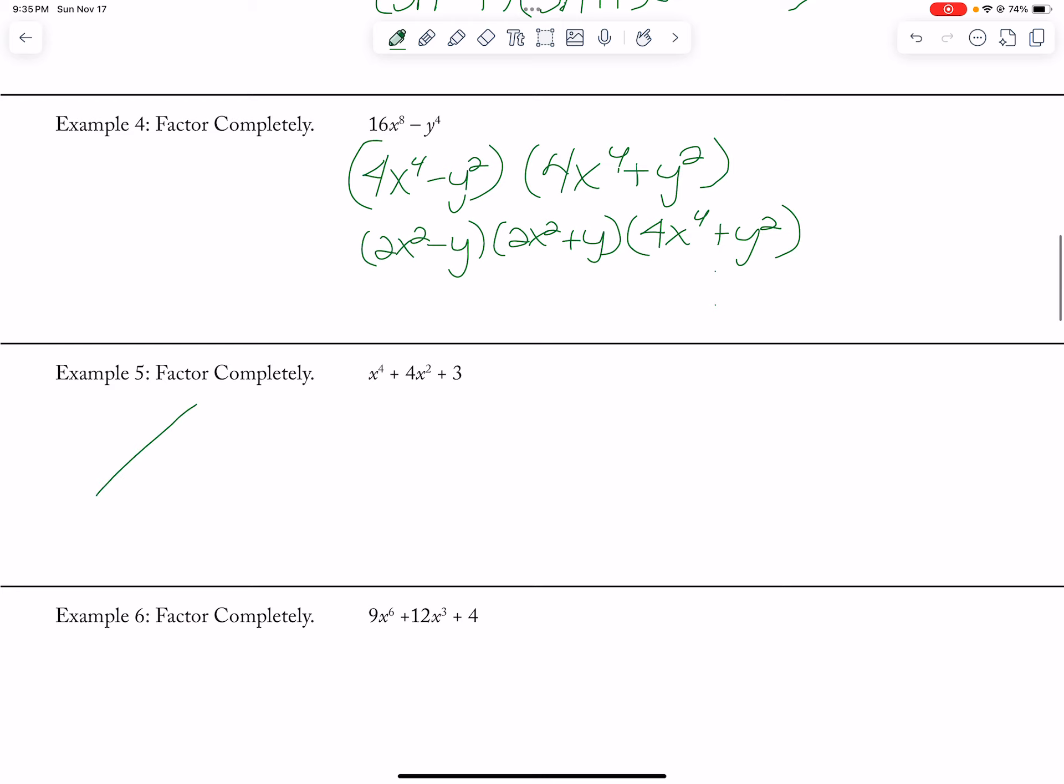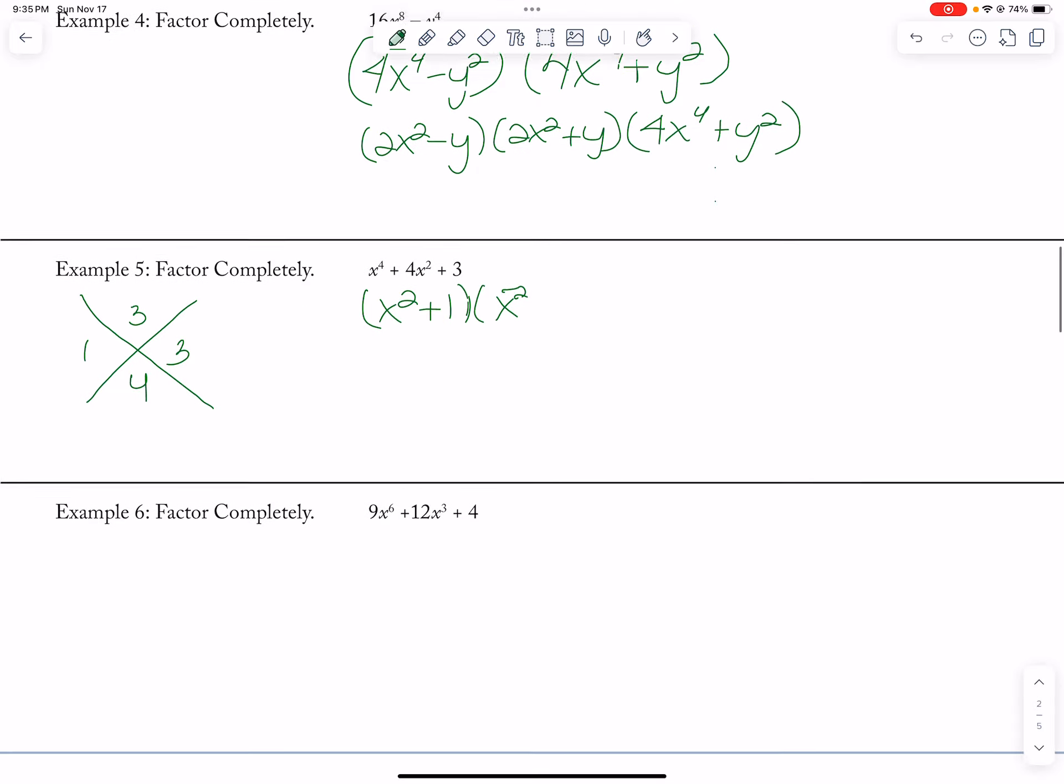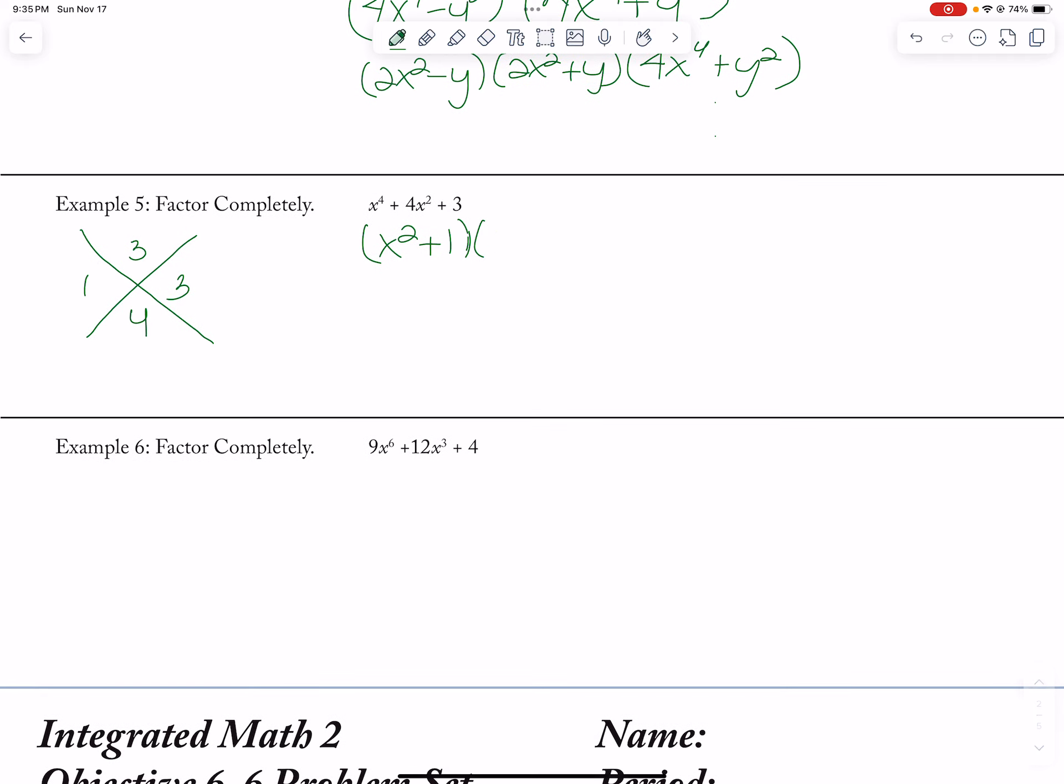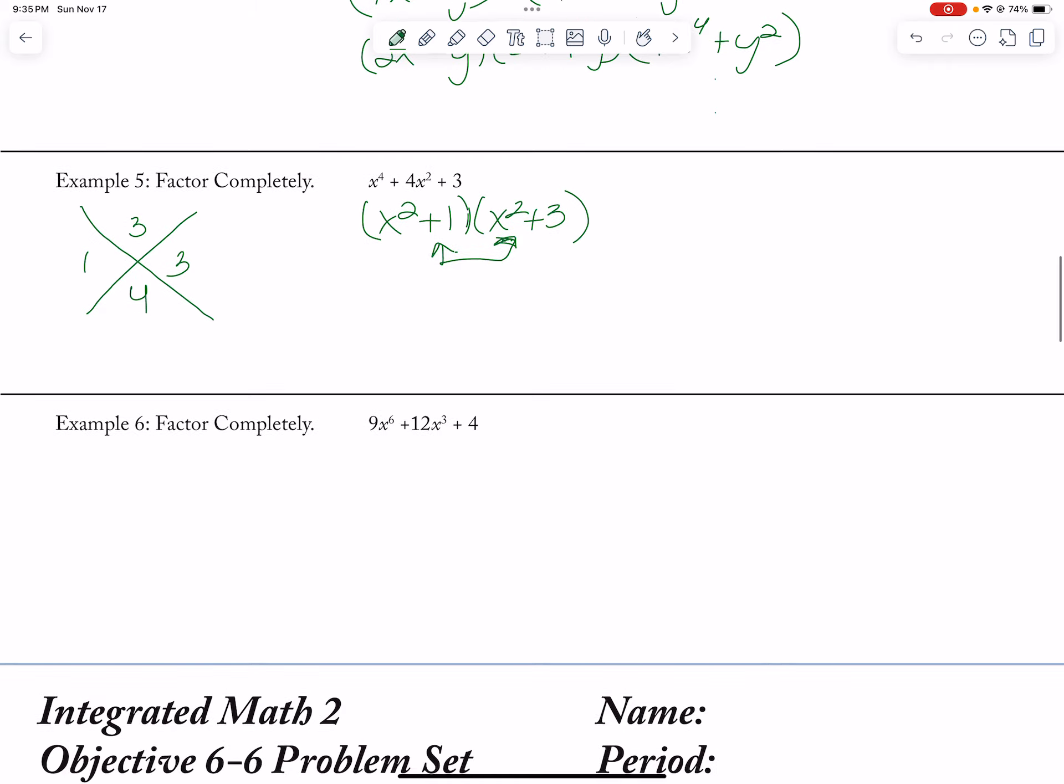Now these ones kind of look like what you've been factoring before. The 3 goes on the top, the 4 goes on the bottom. So it's 1, 3. So then this goes X squared plus 1 and an X squared plus 3. Now if these were to factor more, then I would want you guys to factor it more. But it doesn't, so then you would just leave it.